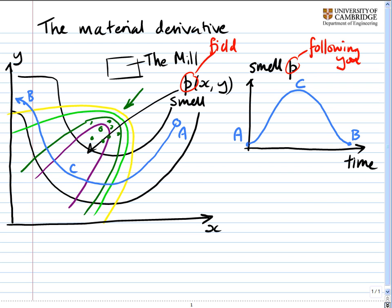Where we've got point A here, point C in the middle, and point B at the end. So the question I want to know is, what is the rate of change of smell? So what is dp/dt, which is that gradient there, following you? So let me write that down at the bottom. What we're after is dp by dt, where that p is following you. And we want to try and get it in terms of the p field and the velocity.